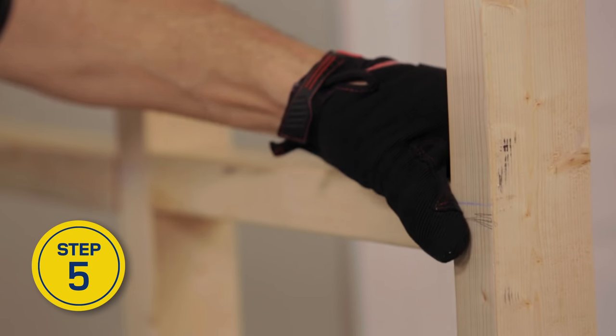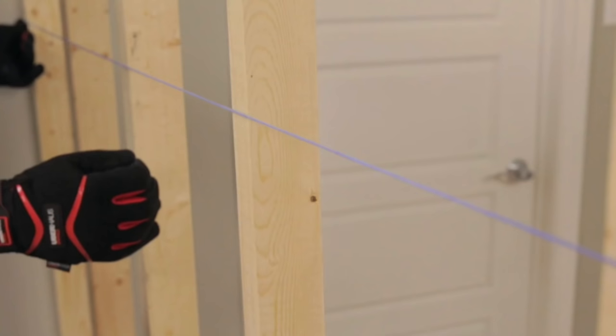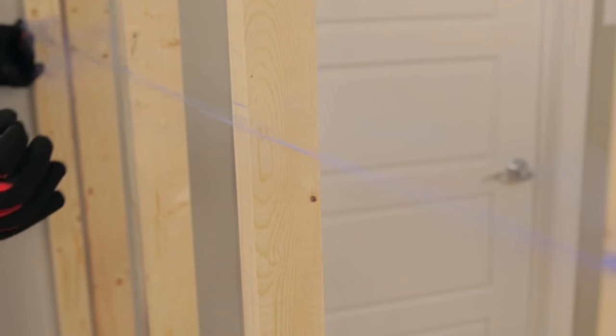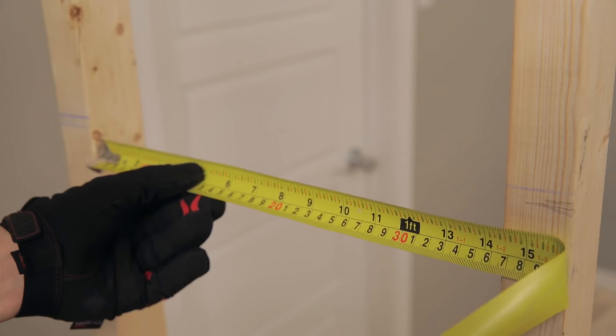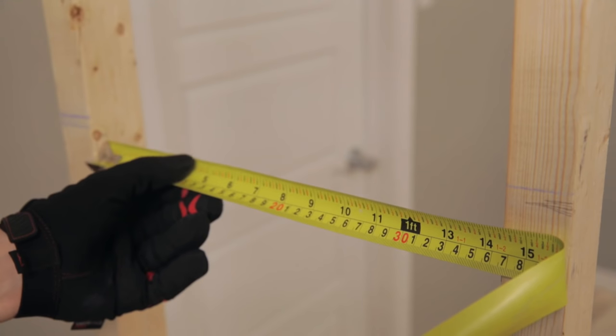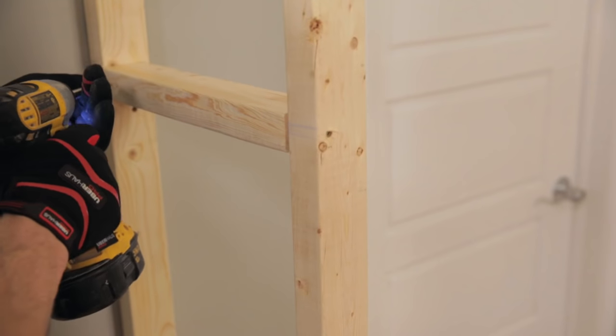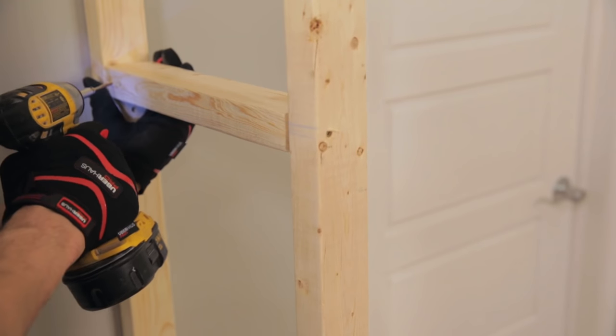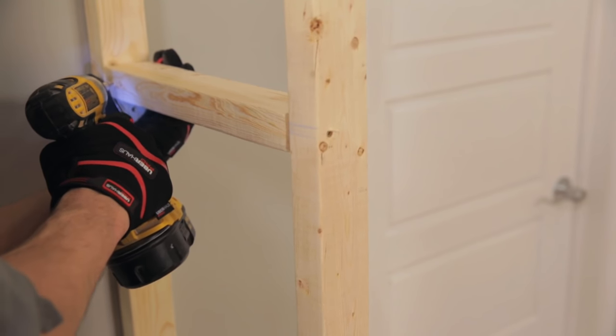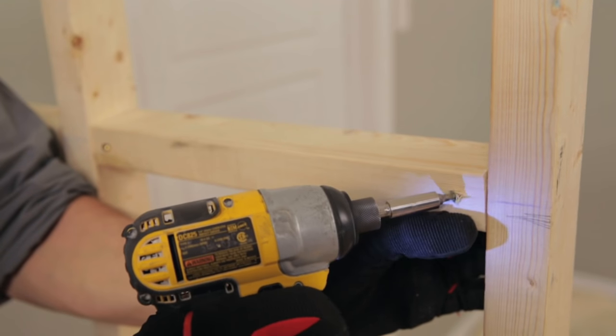Install the cross studs at the center of the studs. Snap a chalk line along the studs at equal distance between the floor and the ceiling. Measure the distance between the faces of the first two studs and cut a cross stud to this length. Align its center along the chalk line and screw it in place. Repeat for all the cross studs.